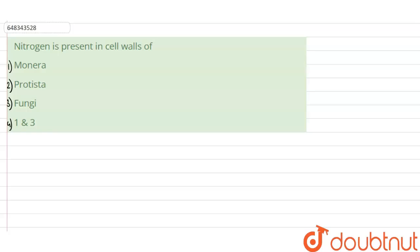Hello everyone, let's start with today's question. Today's question says that nitrogen is present in the cell walls of: option A states Monera, option B states Protista, option C states Fungi, and option D says 1 and 3.